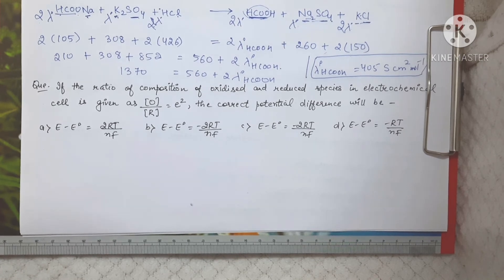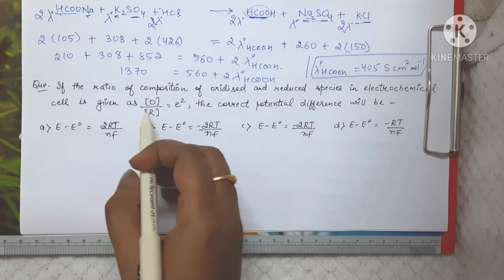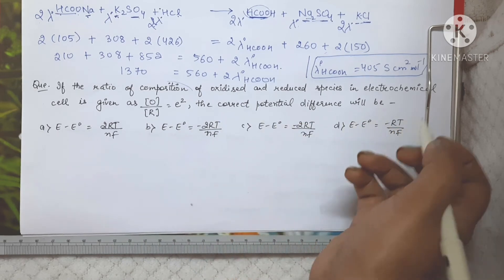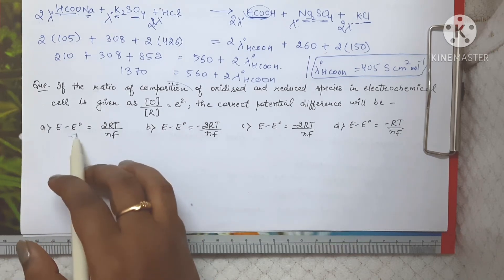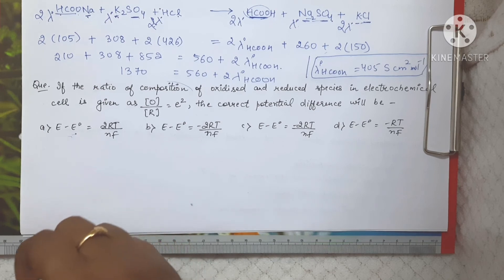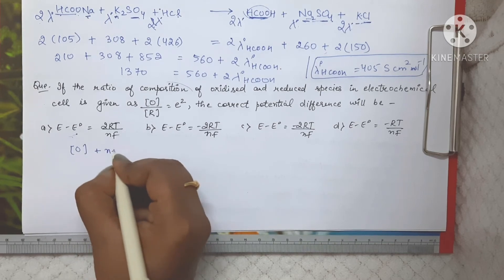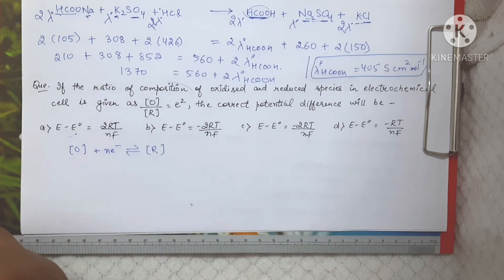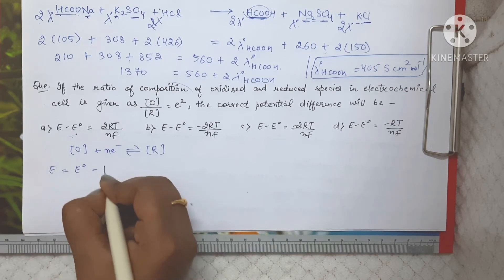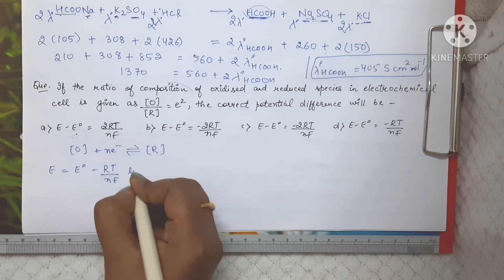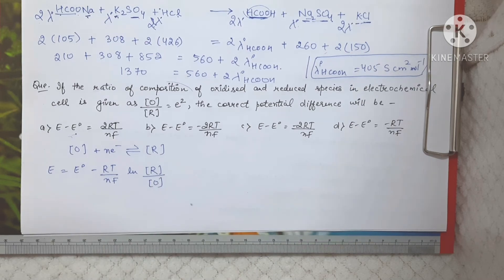The second question says that if the ratio of oxidized to reduced species in an electrochemical cell is given as [O]/[R] = e², we have to find the correct potential difference E − E°. For any reduction half-cell, the Nernst equation is: E = E° − (RT/nF) ln([reduced]/[oxidized]).